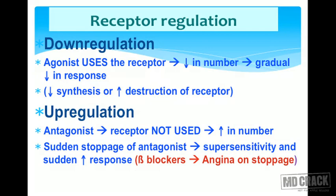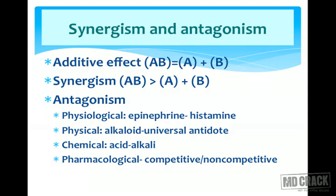The opposite phenomenon is up-regulation, which typically occurs with antagonists. When an antagonist sits on the receptor and blocks it without using the receptor substance, prolonged antagonist use leads to an increase in receptor number — up-regulation. If the antagonist is suddenly stopped, there is super-sensitivity and an abrupt increase in response. Classically, abrupt stoppage of beta-blockers can lead to exaggerated response and angina.